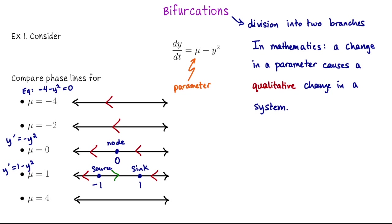Let's finish with mu equals four. That means y prime equals four minus y squared. Once again, we're going to have two equilibrium solutions, this time at negative two and two. If y is either smaller than negative two or greater than two, y prime is negative. Whereas if y is between those two values, y prime is positive. So we haven't had a real change in our system from mu equals one to four — we still have two equilibrium solutions, with a source on the left and a sink on the right.